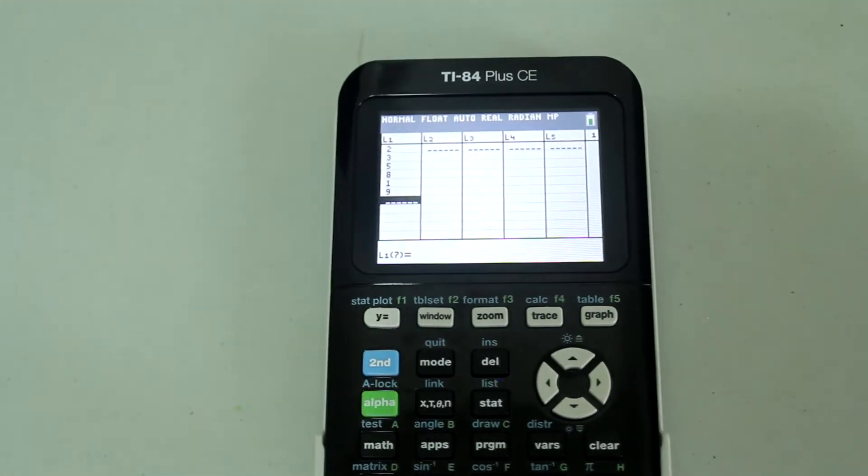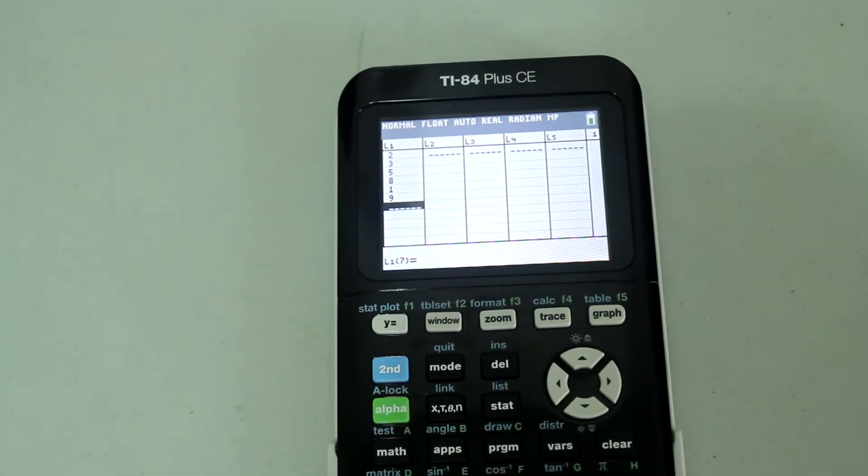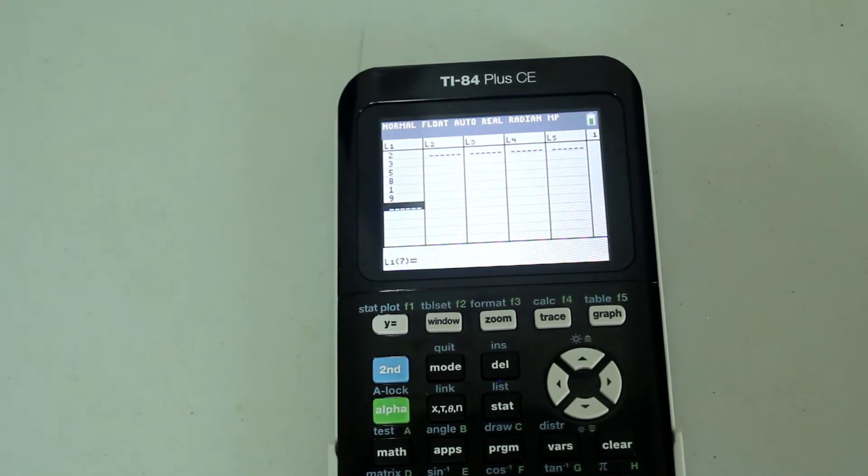It's usually a good idea to look at the list again, so I have 2, 3, 5, 8, 1, and 9.